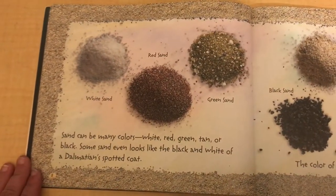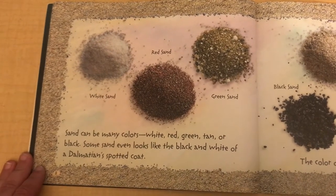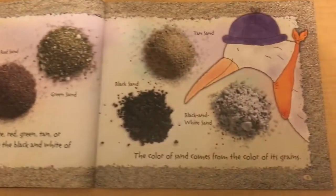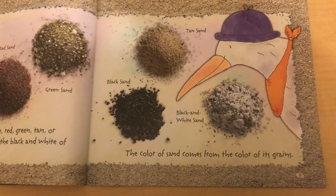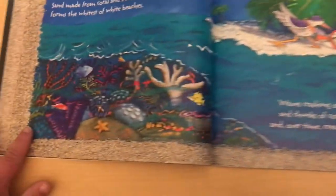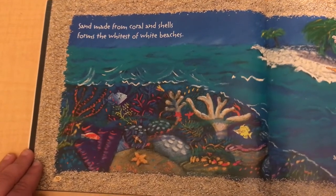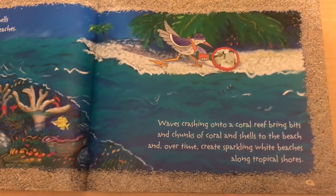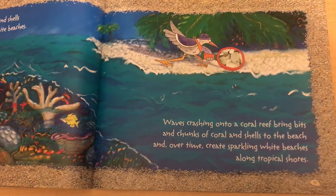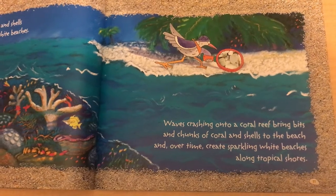Sand can be many colors: white, red, green, tan, or black. Some sand even looks like the black and white of a Dalmatian's spotted coat. The color of sand comes from the color of its grains. Sand made from coral and shells forms the whitest of white beaches. Waves crashing onto a coral reef bring bits and chunks of coral and shells to the beach, and over time create sparkling white beaches along tropical shores.